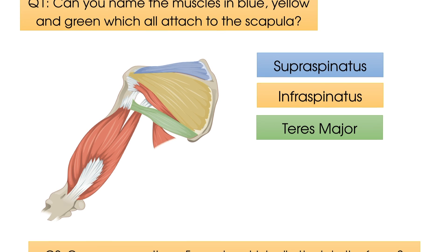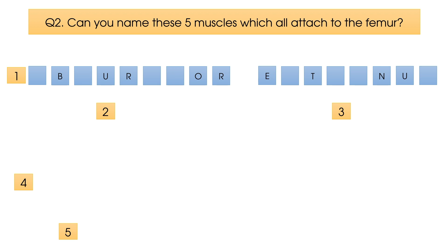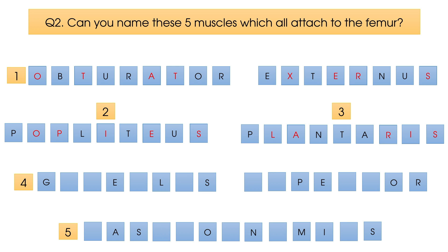Question number two: there are no less than 22 muscles which have an attachment to the femur, the largest bone in the body. Can you name these five muscles which all attach to the femur? The first muscle is obturator externus, the second is popliteus, the third — well done if you said plantaris — number four is gemellus superior, and number five is gastrocnemius.